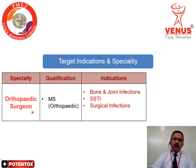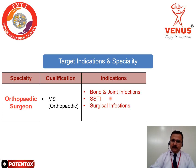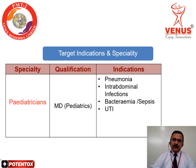The next specialty is the orthopedic surgeon, which mainly includes MS orthopedics. The target indications here are bone and joint infection, skin and soft tissue infection (SSTI), and surgical infections.